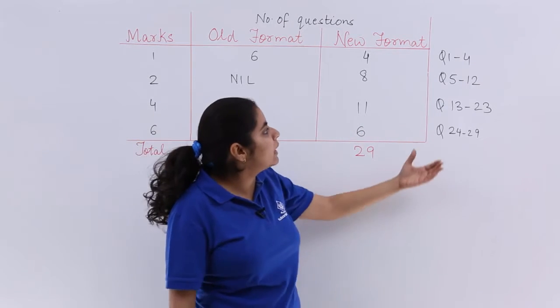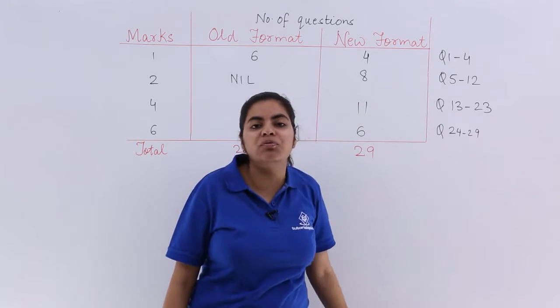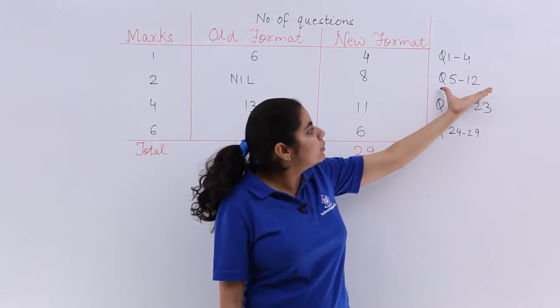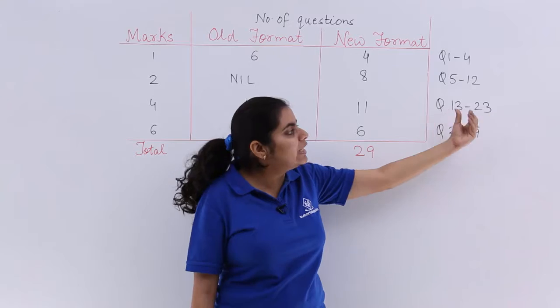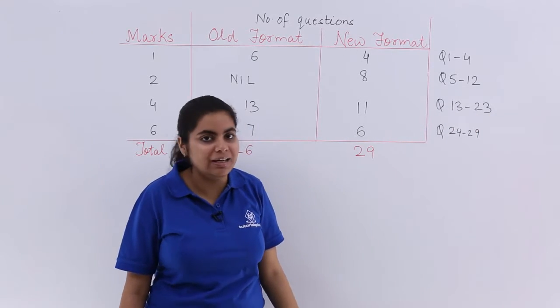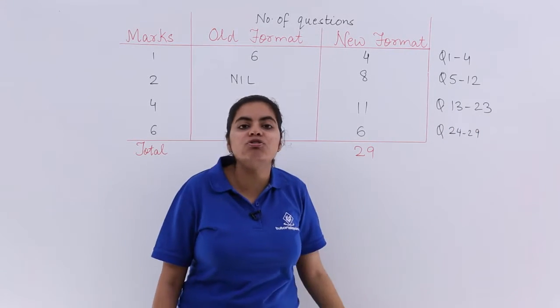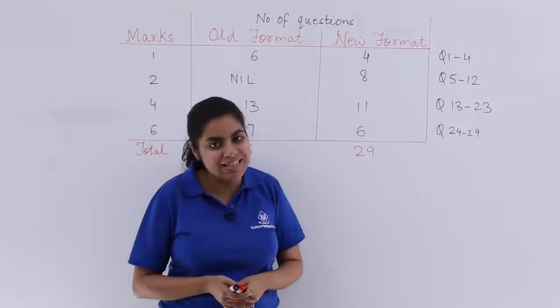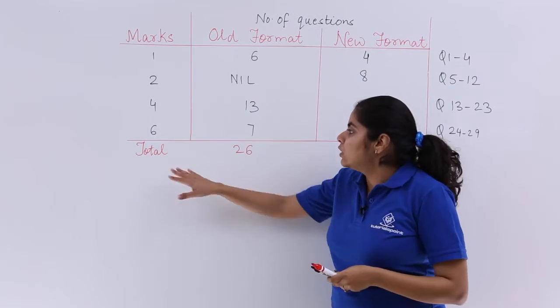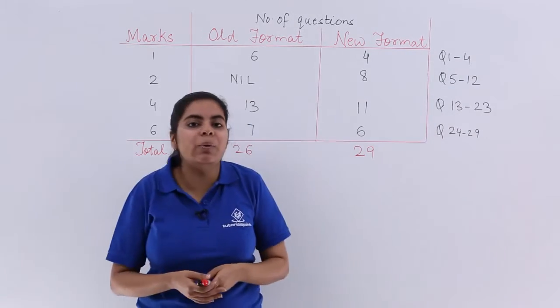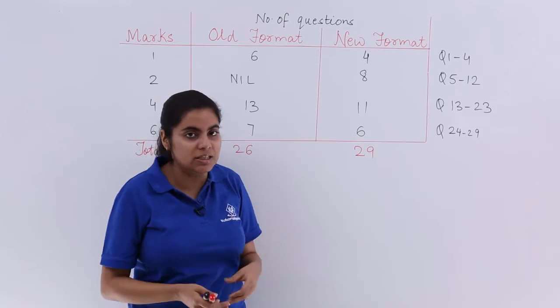So what you can expect in the question paper? Question number 1 to 4, one mark. Question number 5 to 12, two marks each. Question number 13 to 23, four marks each. And question number 24 to 29, it is for six marks. So that means the total number of questions which were earlier 26 has been increased to 29.